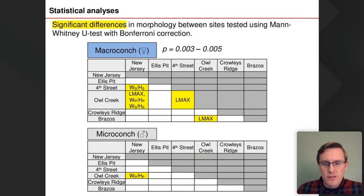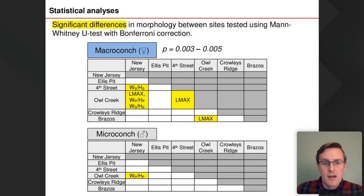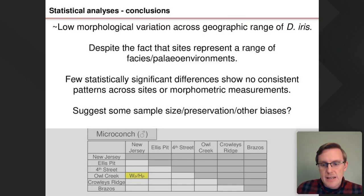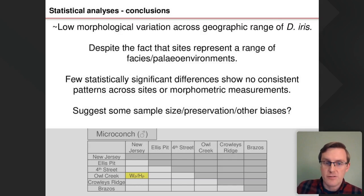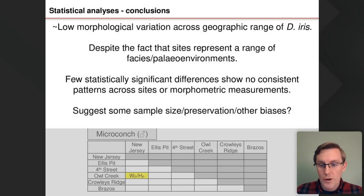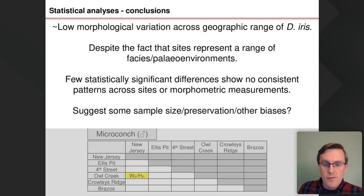We tested these patterns statistically using Mann-Whitney tests to compare differences in traits between sites. The table shows where we do have significant differences highlighted in yellow. The geographic and statistical analyses show pretty low morphological variation across the entire geographic range of the species, despite examining a range of different facies and paleoenvironments. Those statistically significant differences don't show any consistent patterns in terms of which sites or which traits show them, so the significance may be driven by some bias. Overall, I think we're looking at geographic stasis in this species.